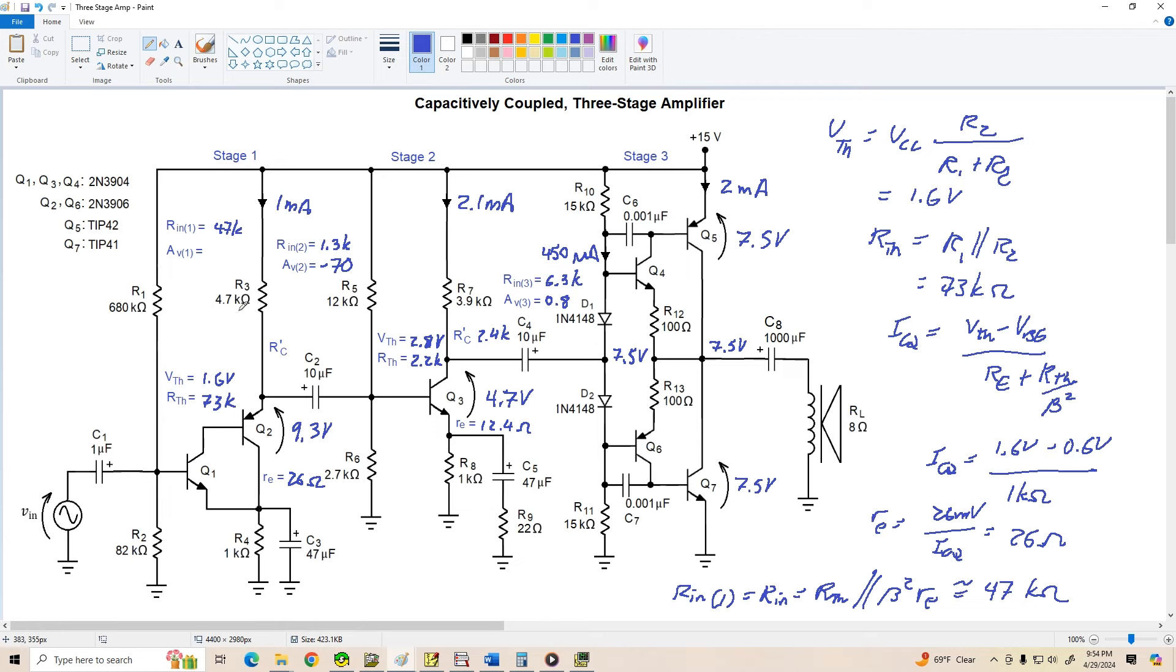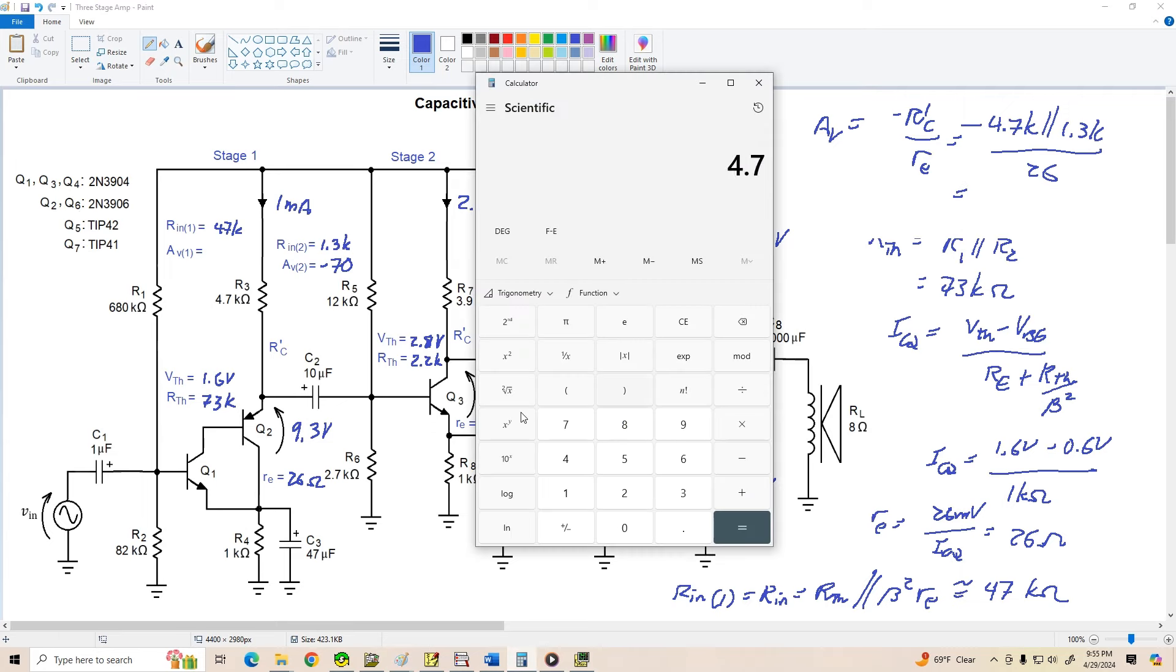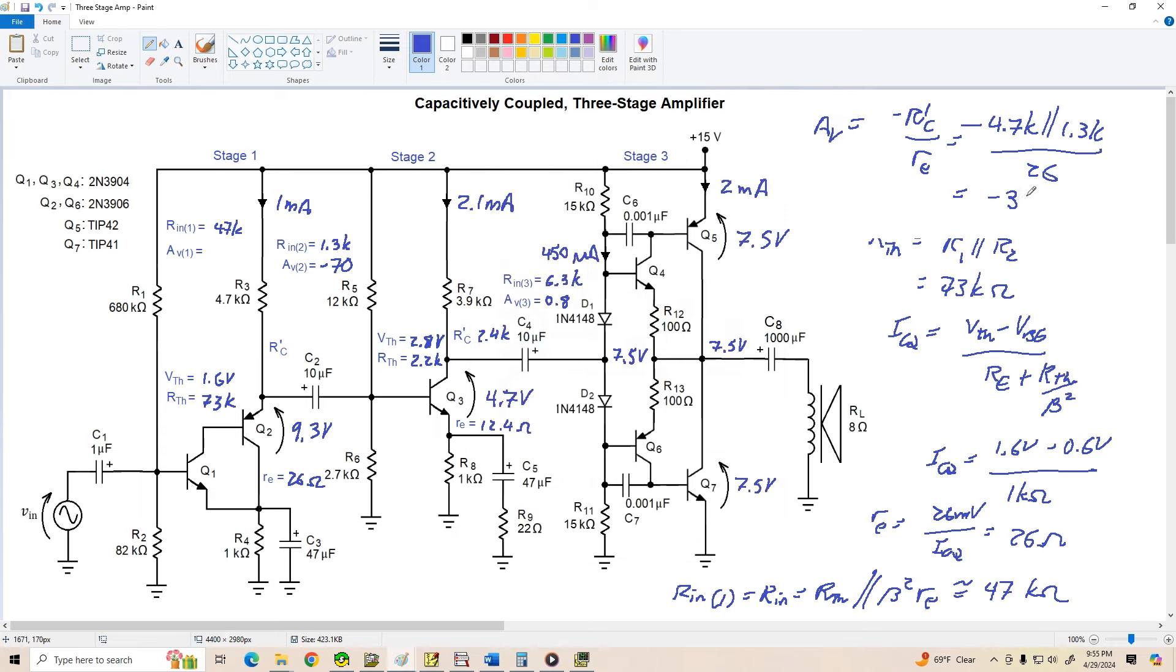And finally, let's find the voltage gain for this stage. Av is equal to negative R prime C over little RE. Negative R prime C is R3 in parallel with RN2. So 4.7K in parallel with RN2, 1.3K divided by 26. And don't forget the negative sign. I got 4.7 plus 1.3, so about 1,018 times 1,000 divided by 26, and we get a voltage gain of about negative 39 for the first stage. So there we are. That was quite a bit of work.